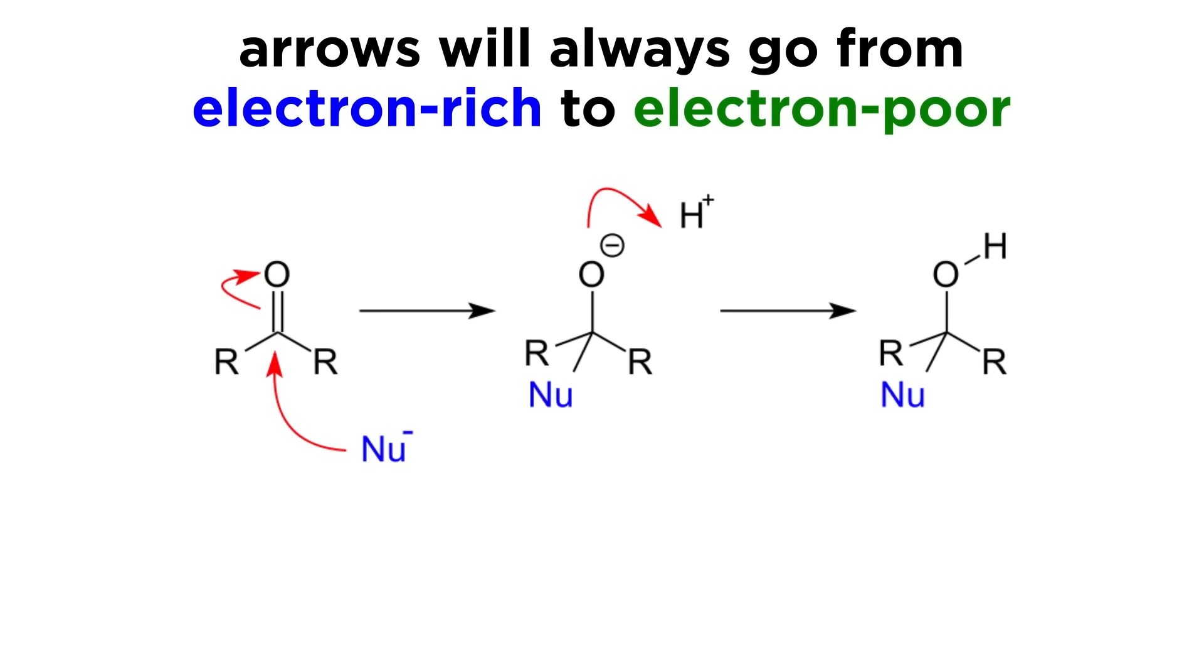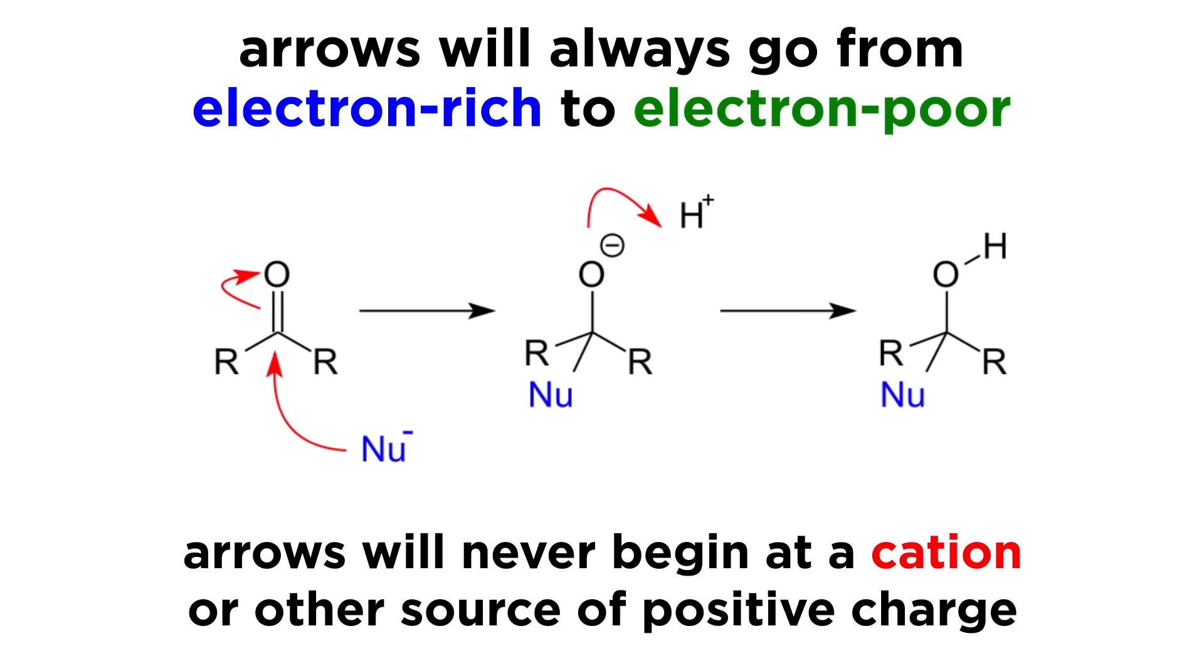The first thing we want to make abundantly clear is that arrows always go from electron-rich to electron-poor. They start at some region of excess electron density and point toward the region of electron deficiency that those electrons are attacking. This is absolutely without exception—you will never see an electron-pushing arrow starting at a cation or partially positive atom.